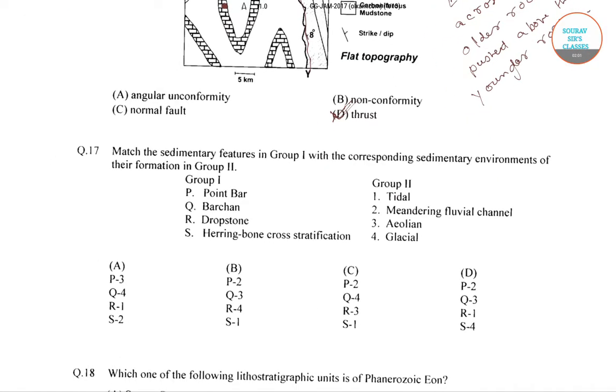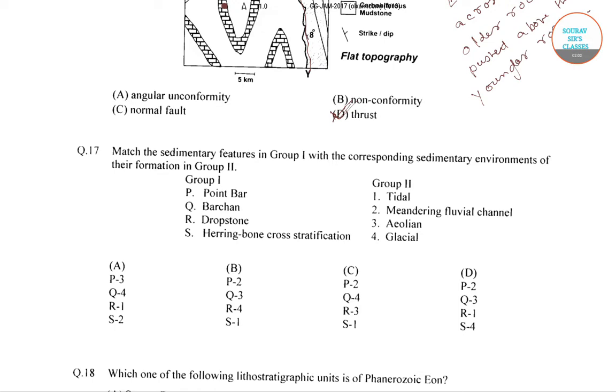In the next question we have, match the sedimentary features in Group 1. That is, Group 1 has sedimentary features corresponding to the sedimentary environment of their formation. For each of these four sedimentary conditions, we have to match it with its corresponding sedimentary environment. The first one is point bar.